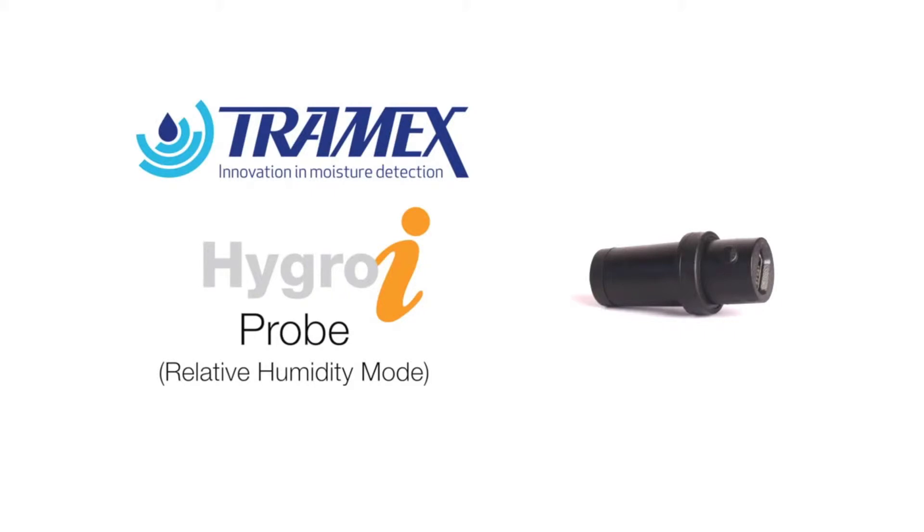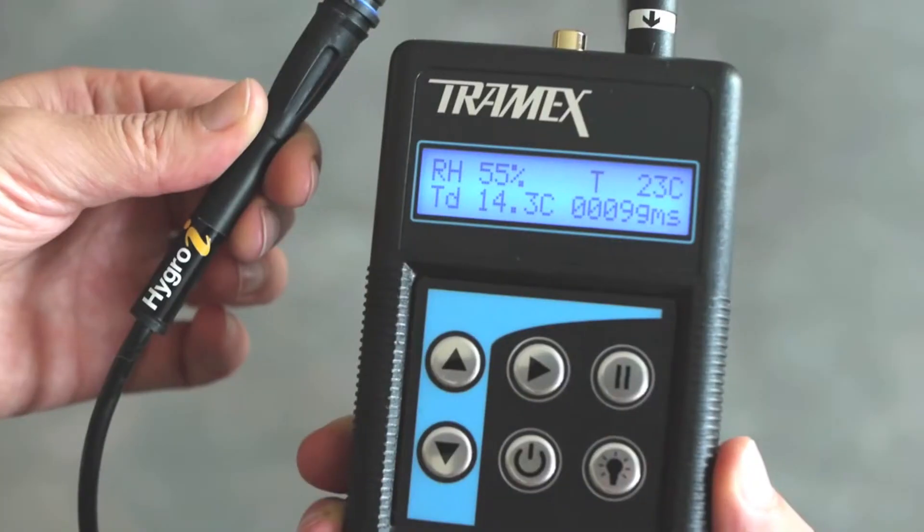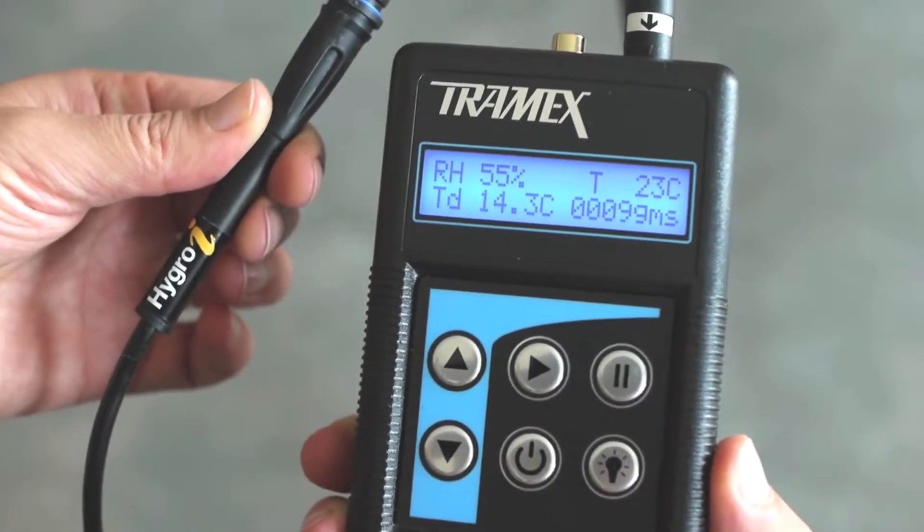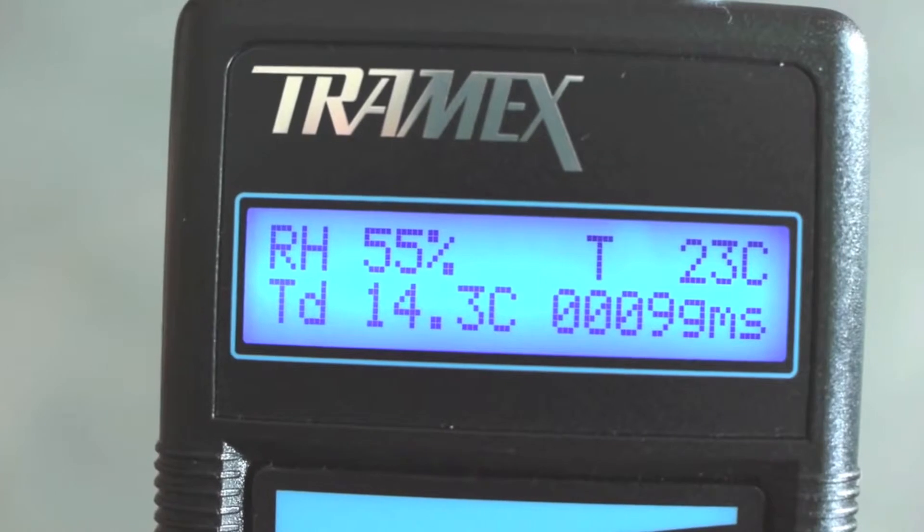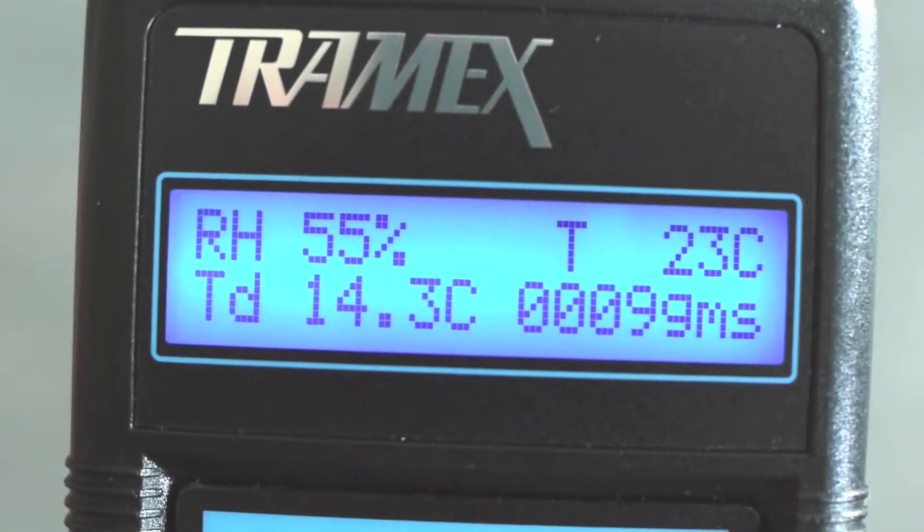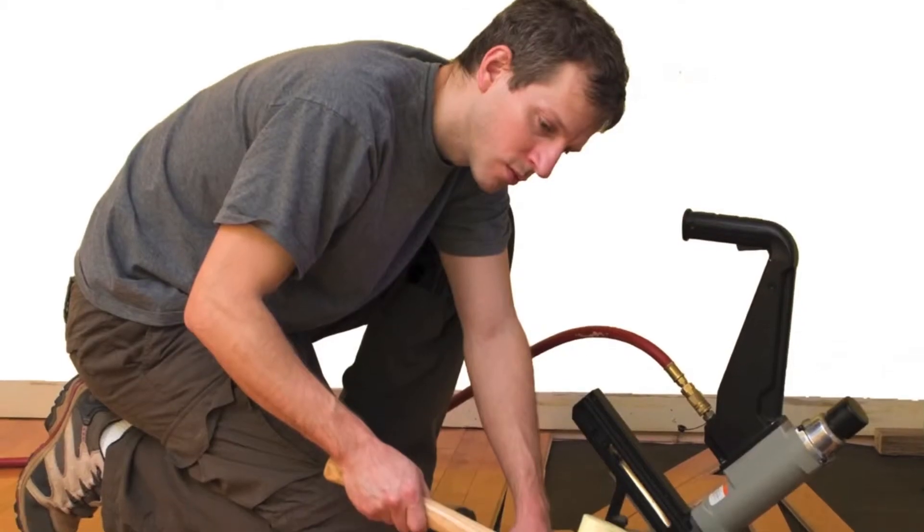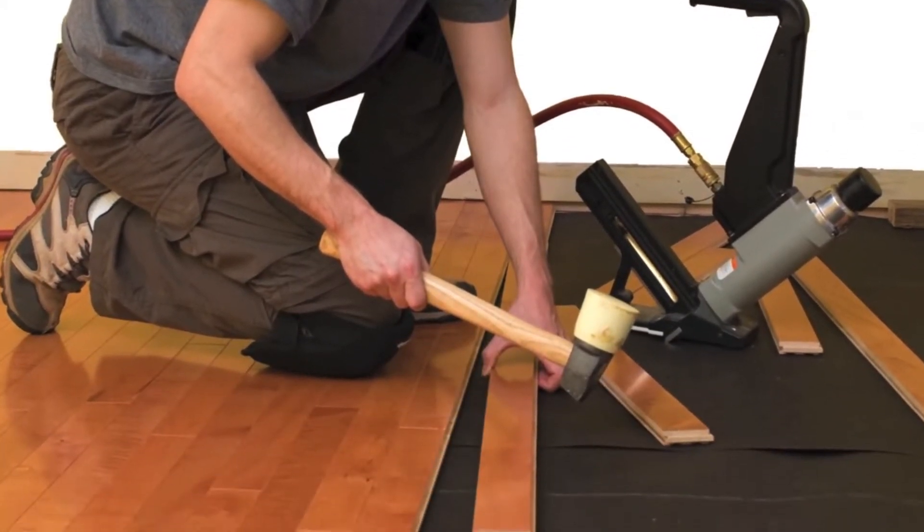In conjunction with the Hygroi relative humidity probe, the CMEx also functions as a digital hygrometer. The meter displays the relative humidity, temperature, dew point and mixing ratio, allowing the user to assess the environmental ambient conditions within the building, making sure they are suitable for installing a floor covering.